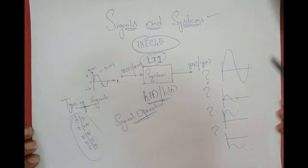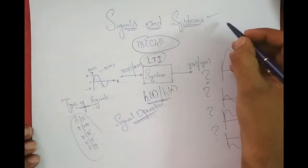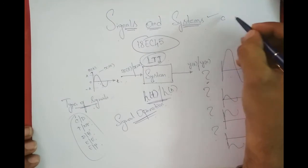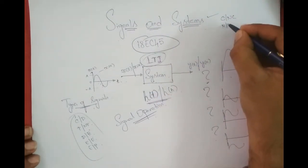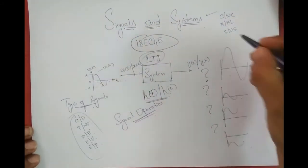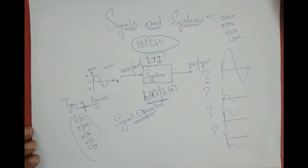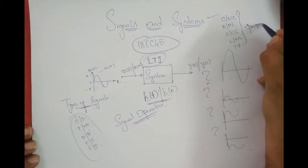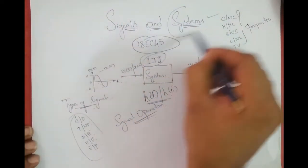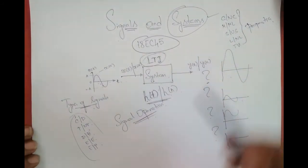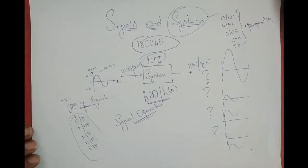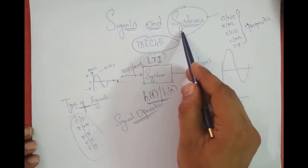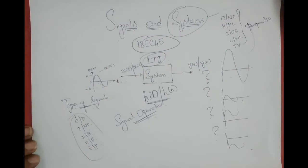With respect to systems, given a system, we have a few properties. We have causal or non-causal systems, memory or memoryless systems, stable or unstable systems, linear or non-linear systems, and time-varying or time-invariant systems. These are all properties of a system. Given a system, you should be able to recognize its properties — whether it is causal, memoryless, stable, or time-invariant.